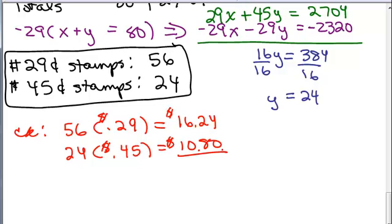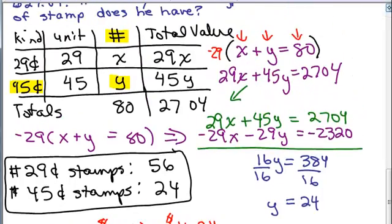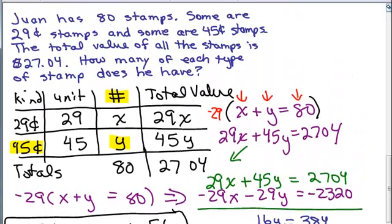And then we want to add those two numbers together. And I got 27 dollars and 4 cents. And that is what we were given at the beginning. So here's the problem.